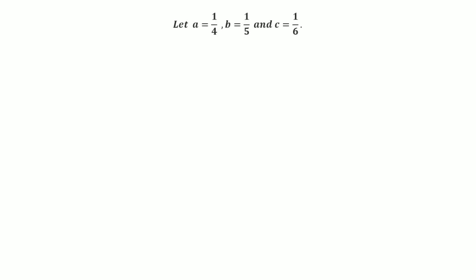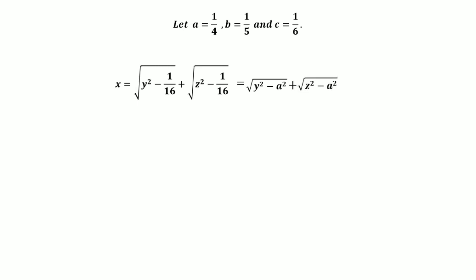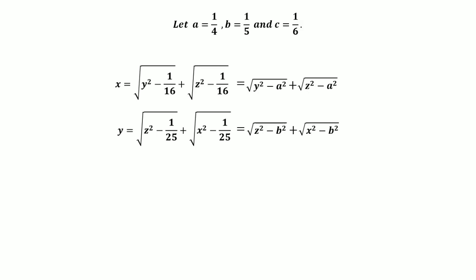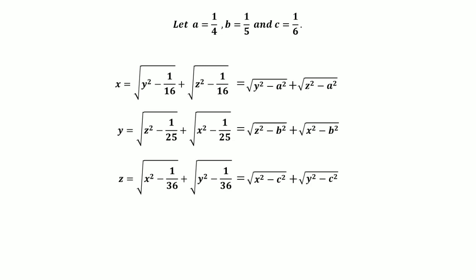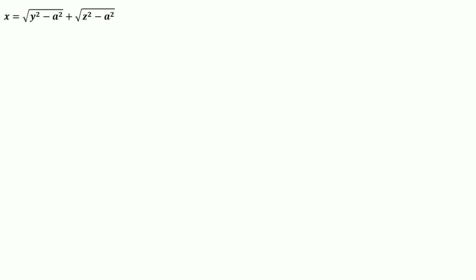To make the question more understandable, let a = 1/4, b = 1/5, and c = 1/6. Substituting these values, x equals the square root of (y² − a²) plus the square root of (z² − a²); y equals the square root of (z² − b²) plus the square root of (x² − b²); and z equals the square root of (x² − c²) plus the square root of (y² − c²). These are our working equations.